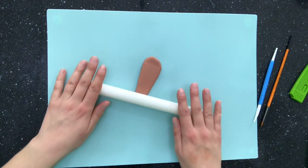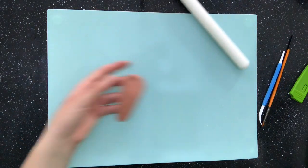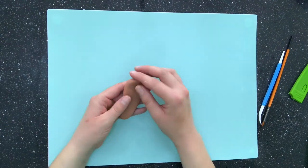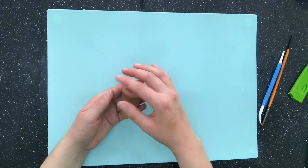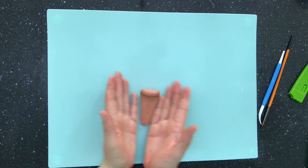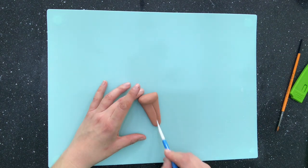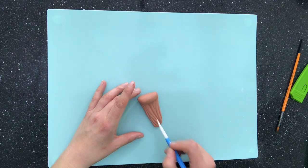For my squirrel's tail I take more of my modelling paste and create a long petal shape. Then at the wider end I curl it over and then use my sculpting tool to score in some fur lines.